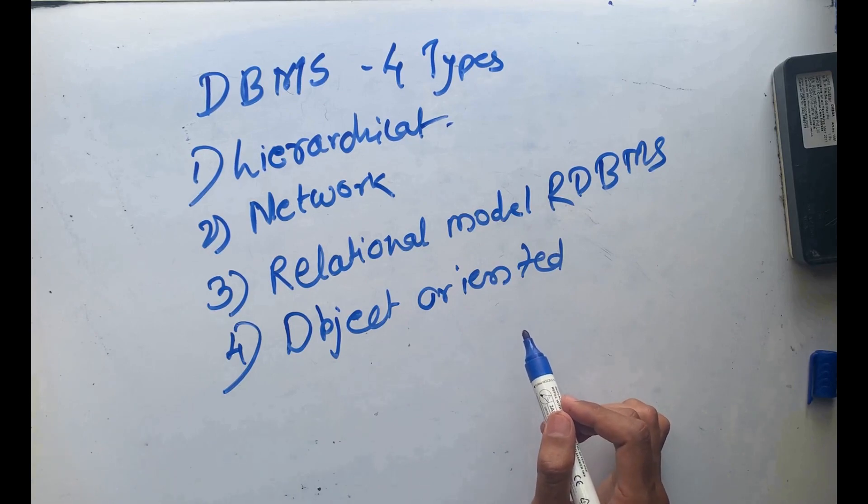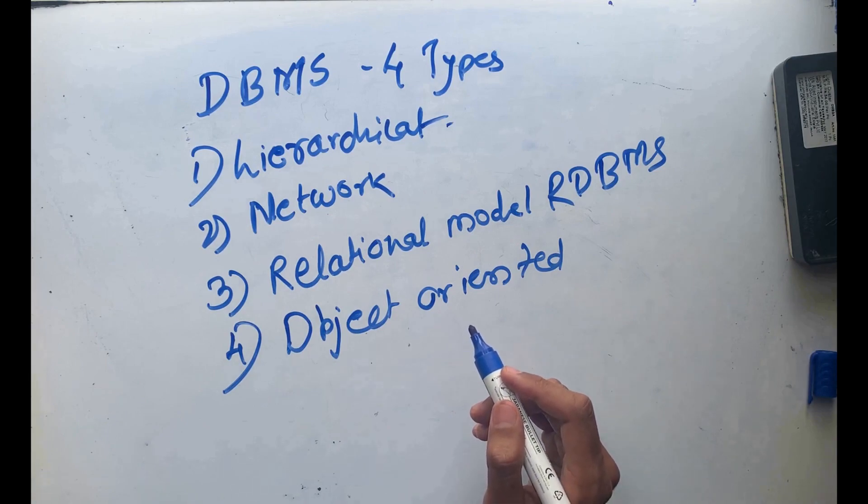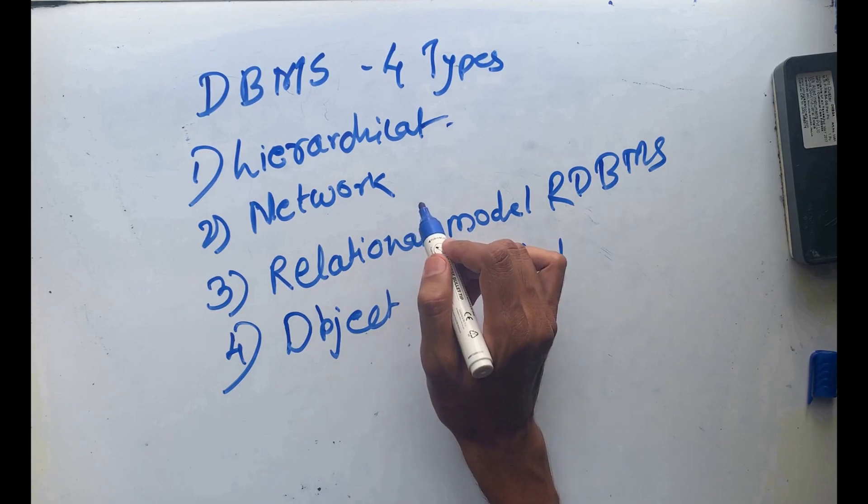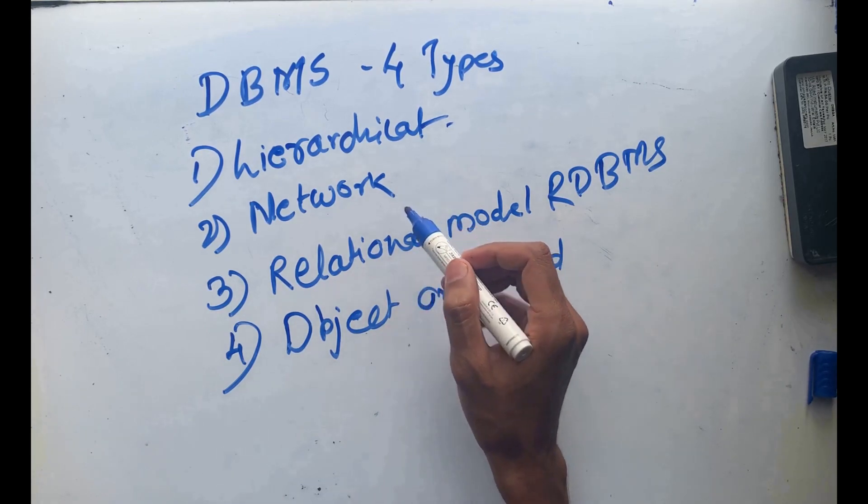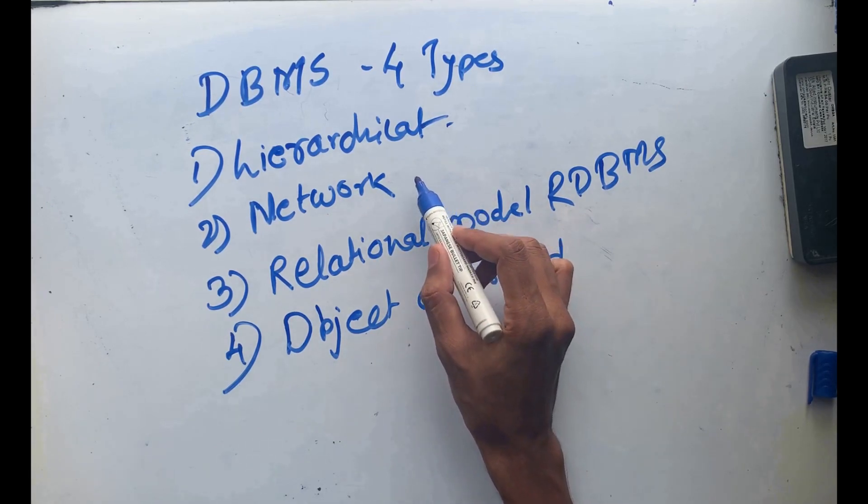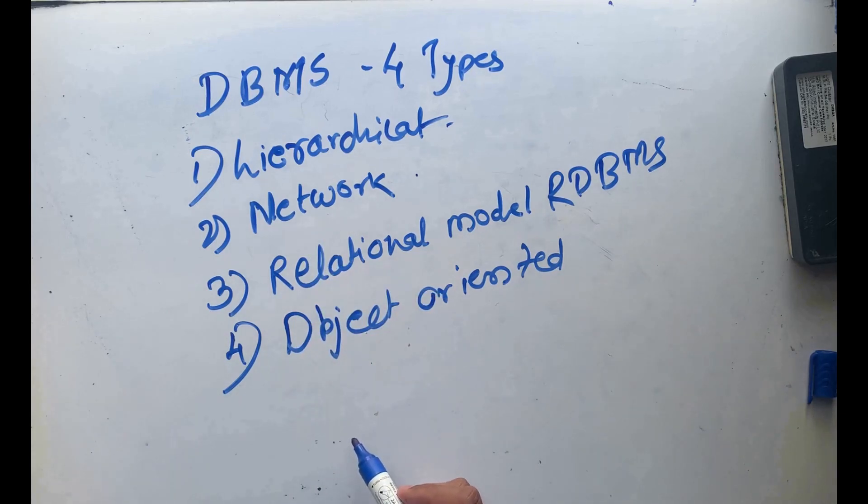In network model, you can easily address complex relationships between different rows. It has many-to-many relationships between objects in the network model.